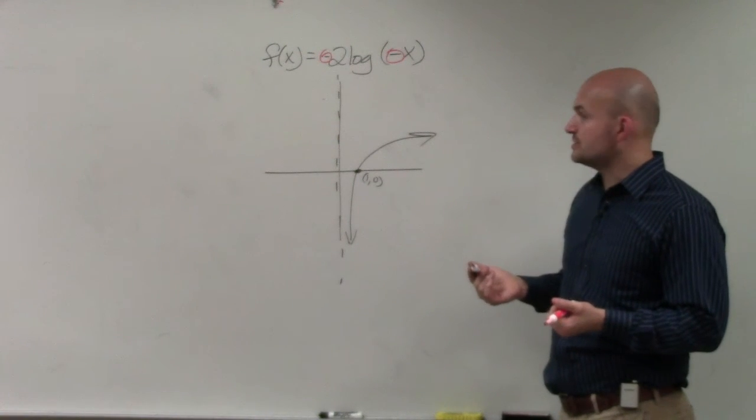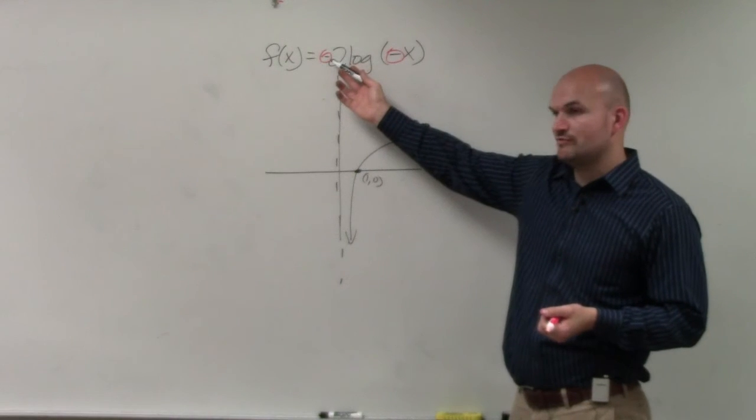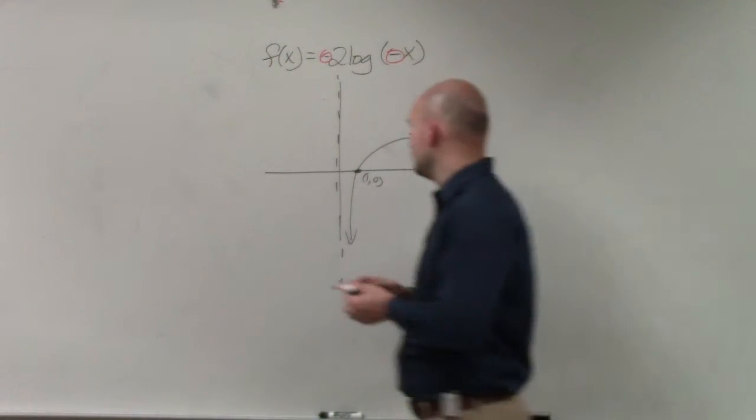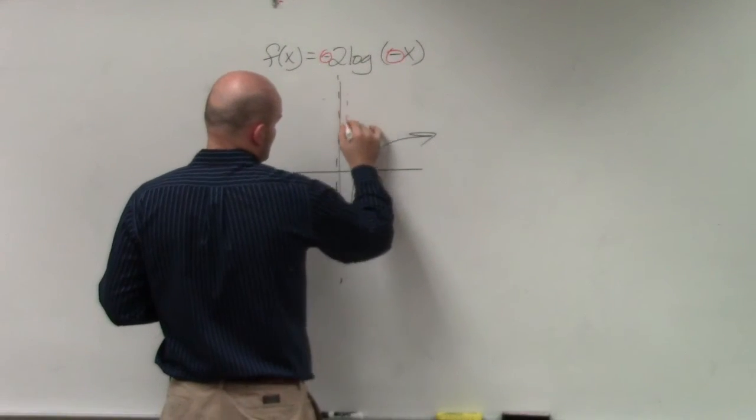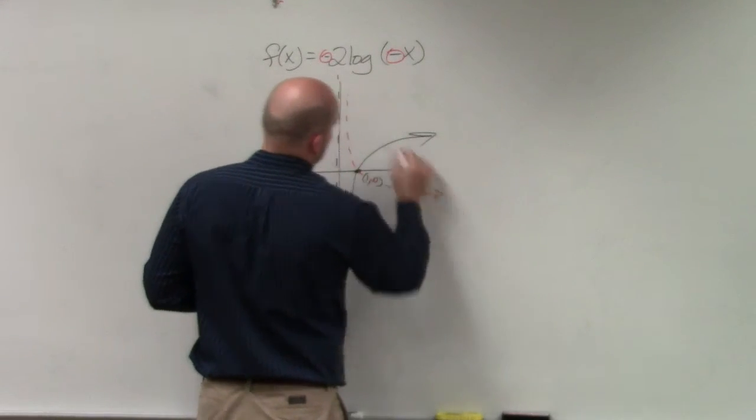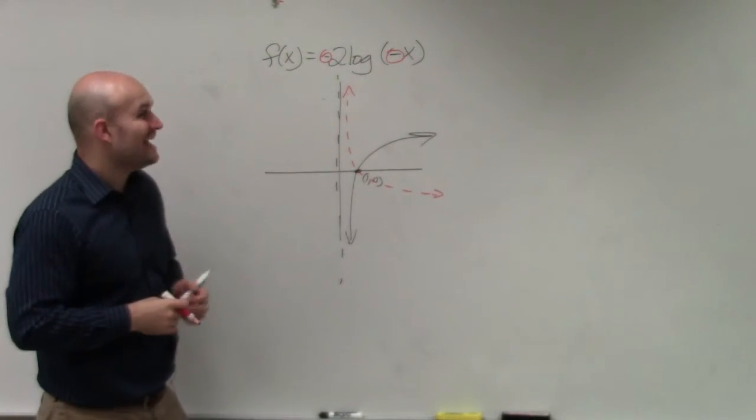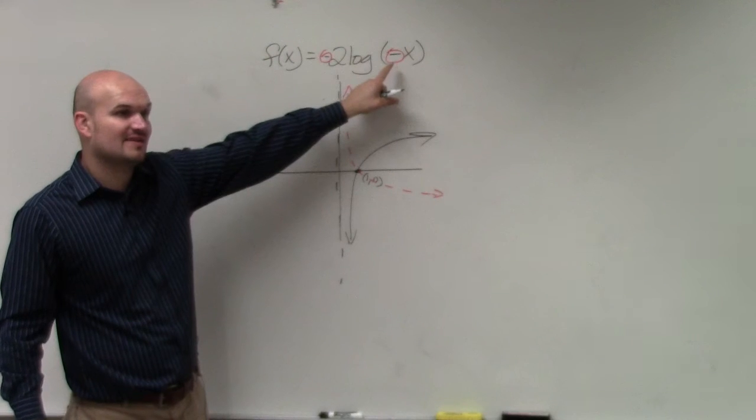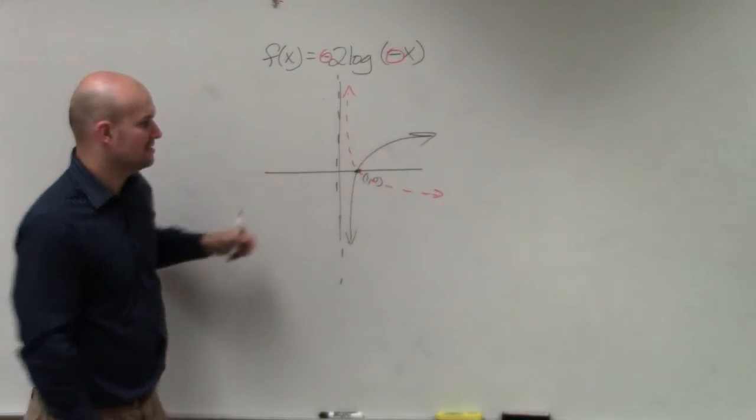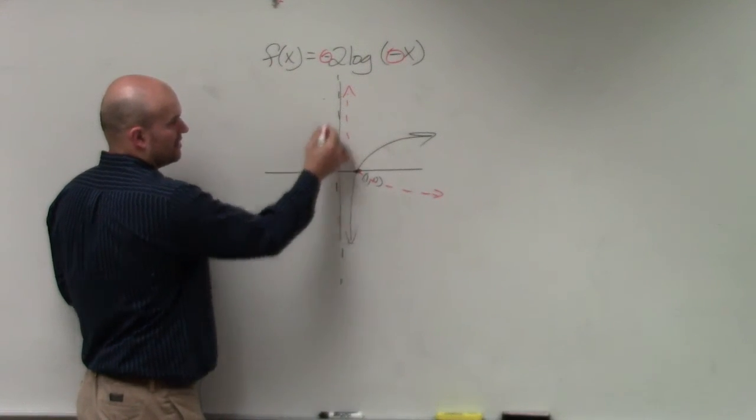But the main important thing I want you guys to understand is this is a reflection of the x-axis. So therefore, the graph now looks something like this. And then we have to reflect the negative. That tells you to reflect the y-axis. So now, the graph needs to be over here.